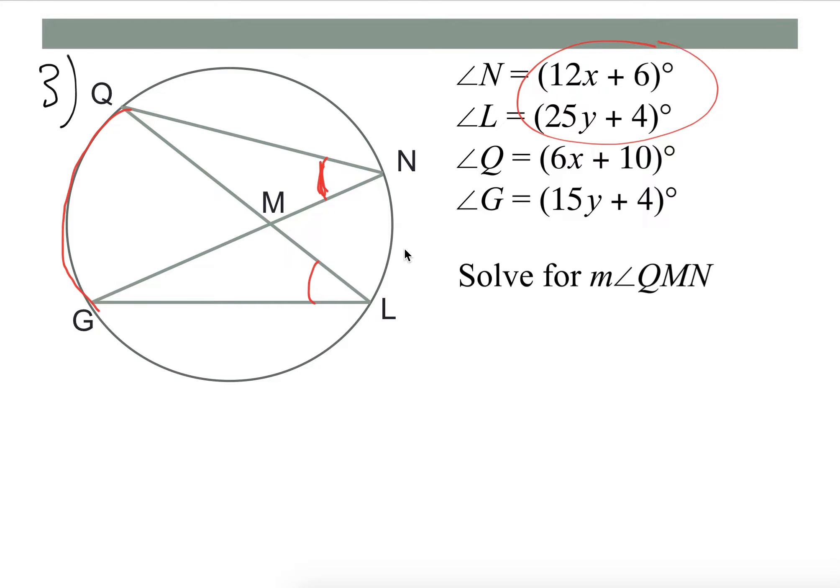So that means we could set these congruent. So 12x plus 6 equals 25y plus 4.